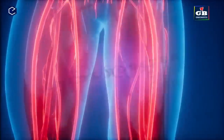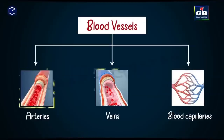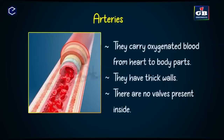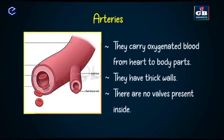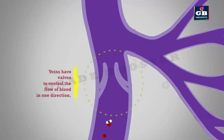We have three different types of blood vessels: arteries, veins, and capillaries. Arteries carry oxygenated blood from the heart to different parts of the body. The heart pumps blood into arteries with great pressure, so arteries have thick and elastic walls to resist this blood pressure. Veins collect deoxygenated blood from the body parts and carry it to the heart. Since blood pressure is low in veins, they do not have thick walls, but they have valves to ensure blood flows in only one direction.